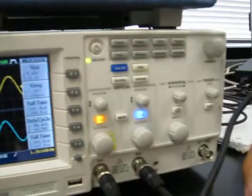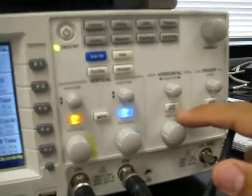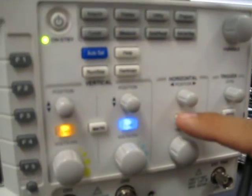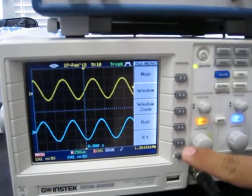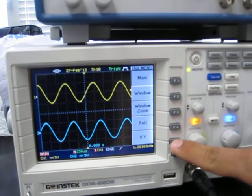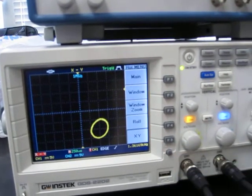But if we want to see a Lissajous figure, we hit the horizontal menu button and it'll bring this window up under the XY function here. And it makes a figure.